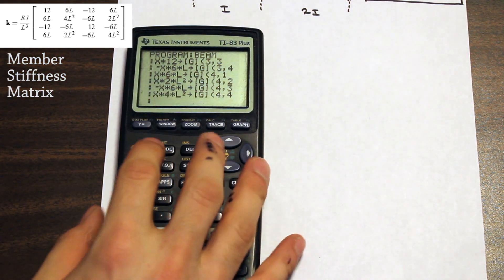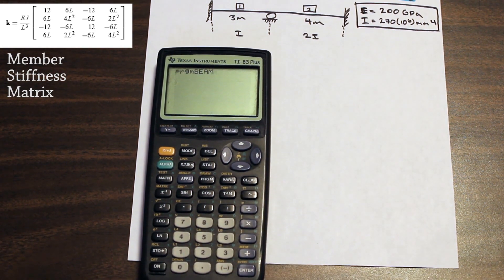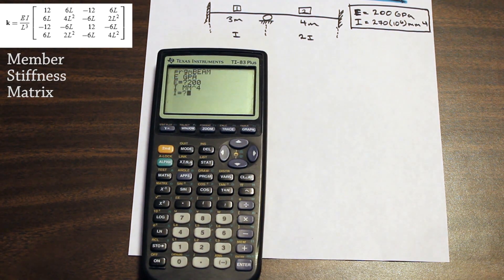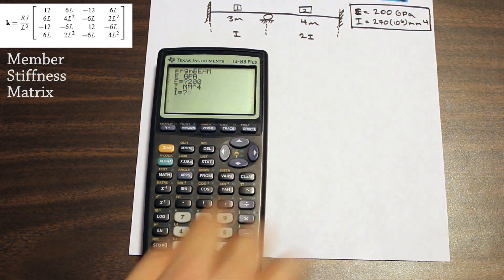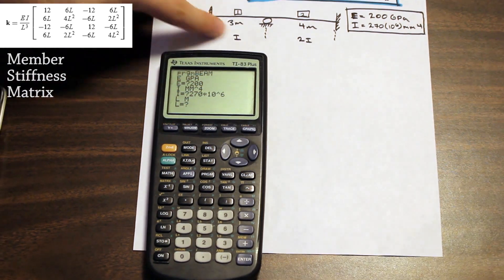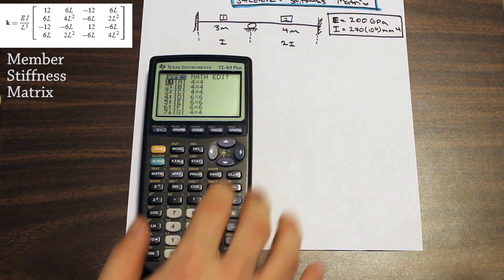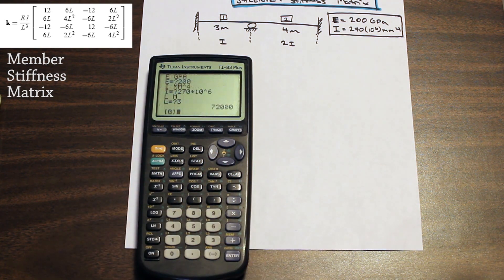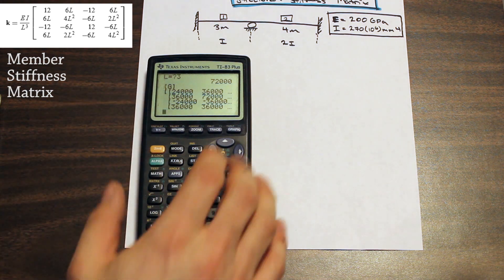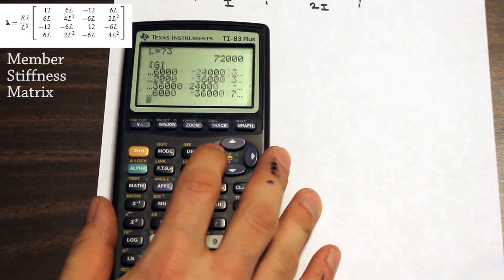Let's test the program. We quit, clear, go to program, and open our beam program. We're asked for E in GPa — let's enter 200. For I in mm⁴, we enter 270 times 10 to the sixth. For L, let's evaluate the K matrix for member one with a length of three meters. We then go to the matrix and retrieve matrix G, and by pressing enter, we're given the stiffness matrix for member one. We can scroll around to view all entries.